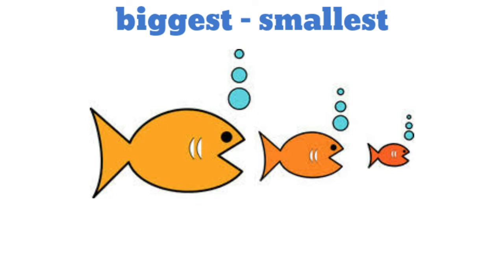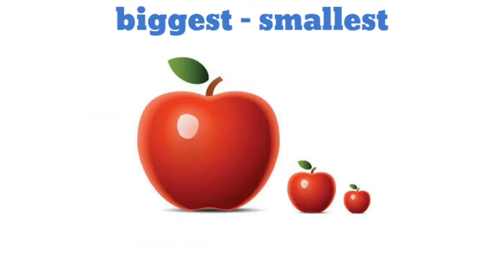Children, look at these fishes. Among these three fishes, tell me which is the biggest fish. That's right — the left corner fish is the biggest among the three. Now children, tell me among these three apples which is the smallest one. Very good — the right corner is the smallest apple.